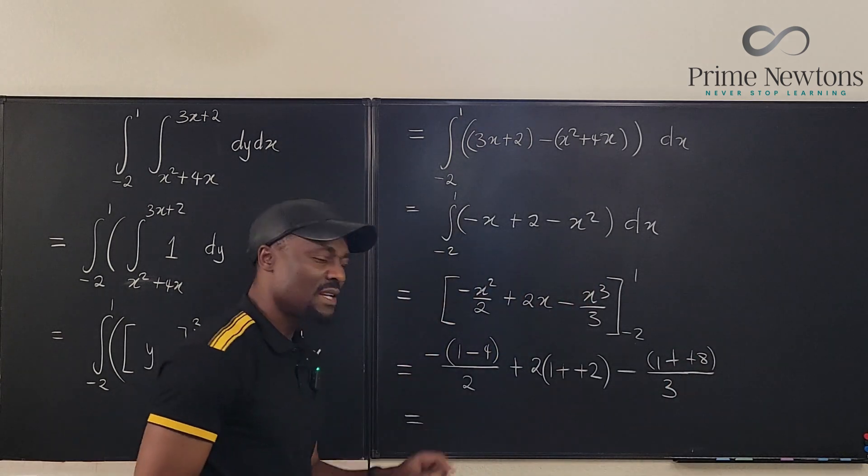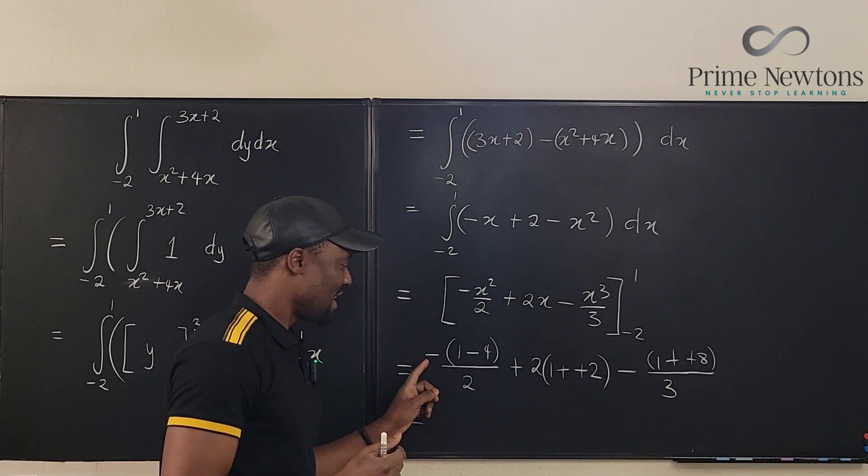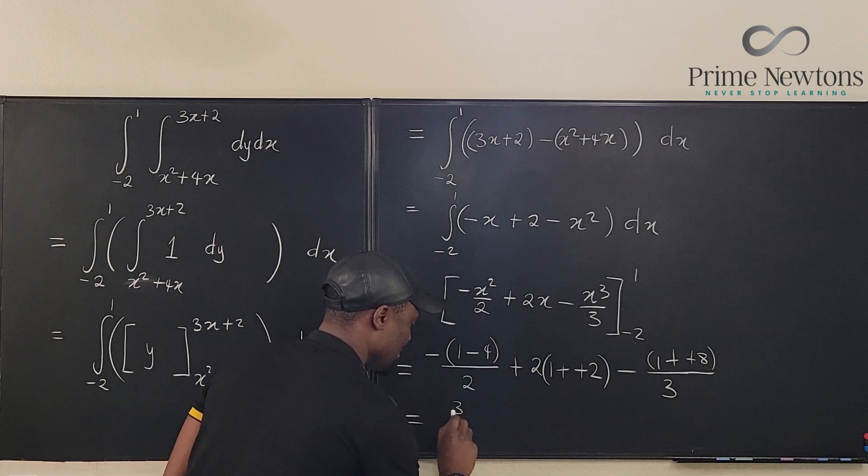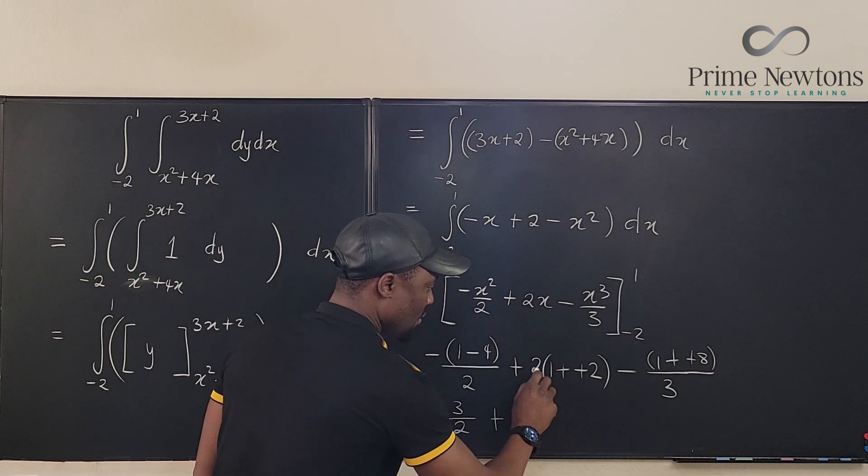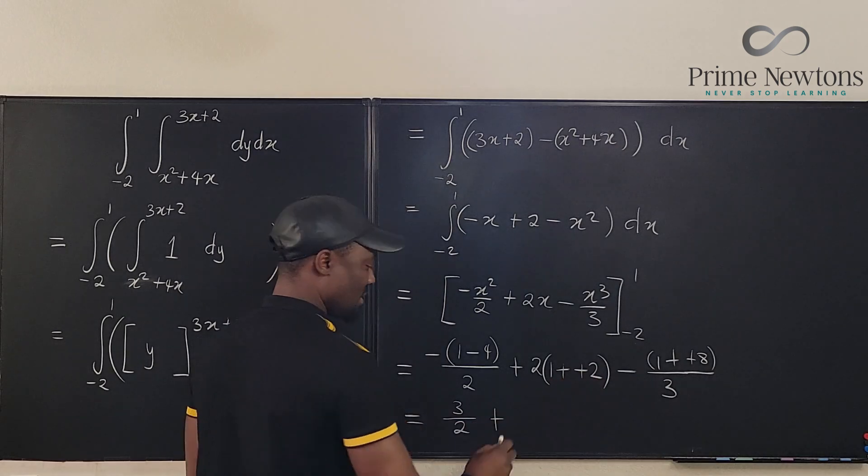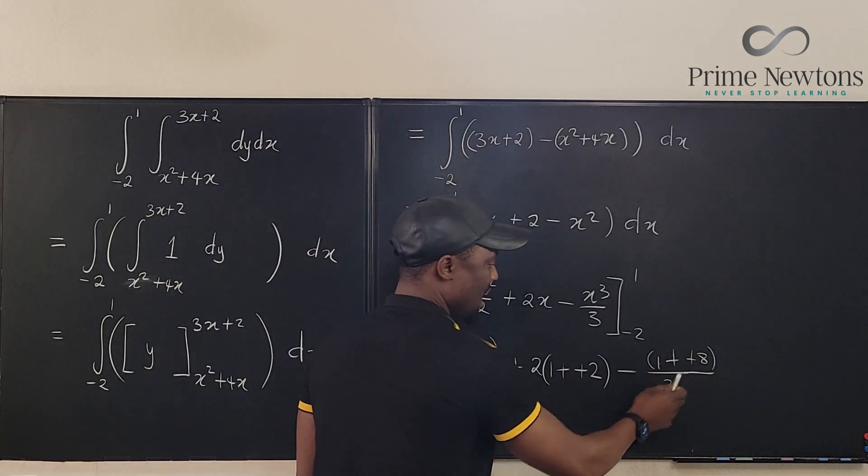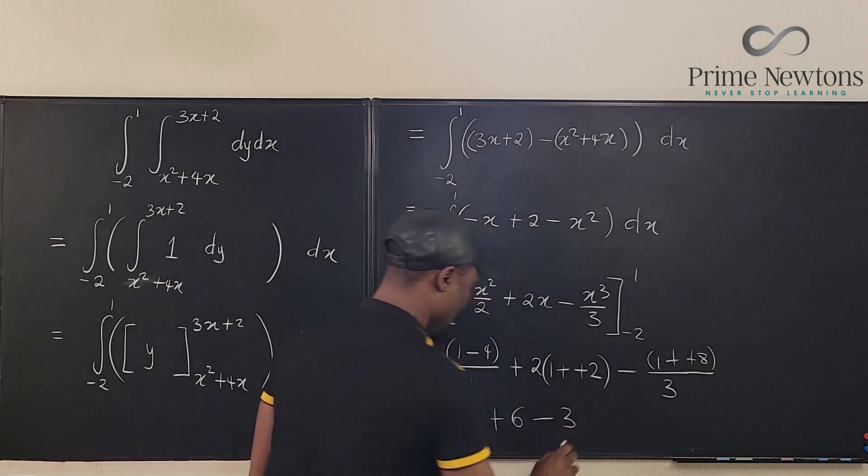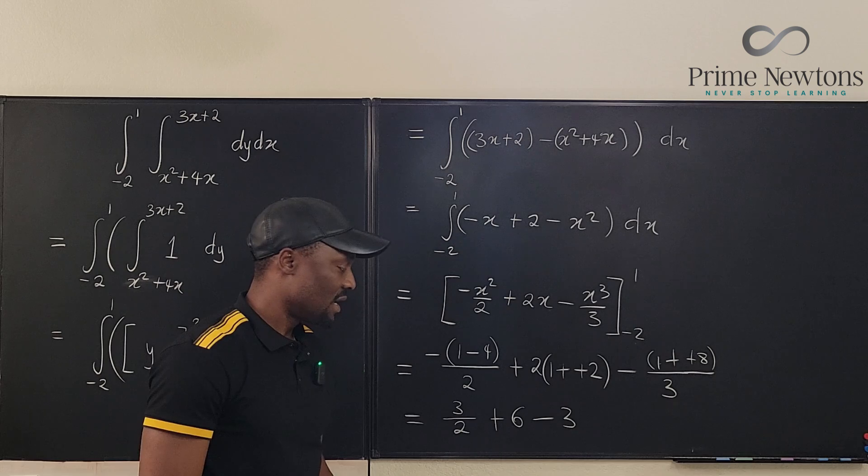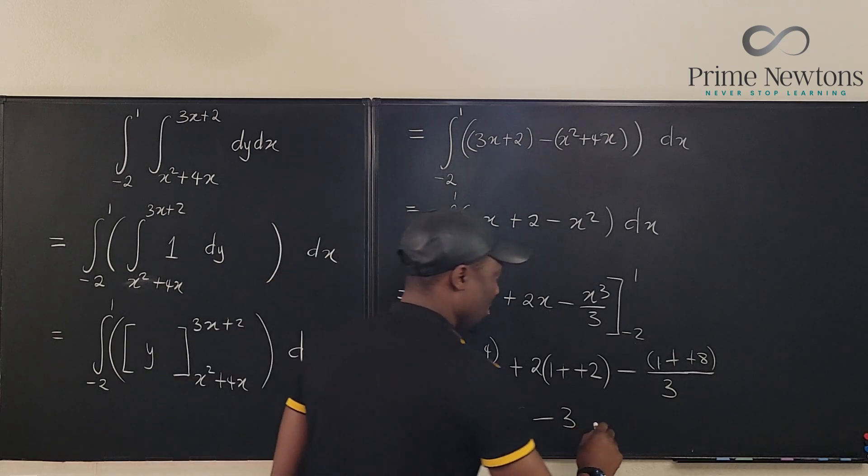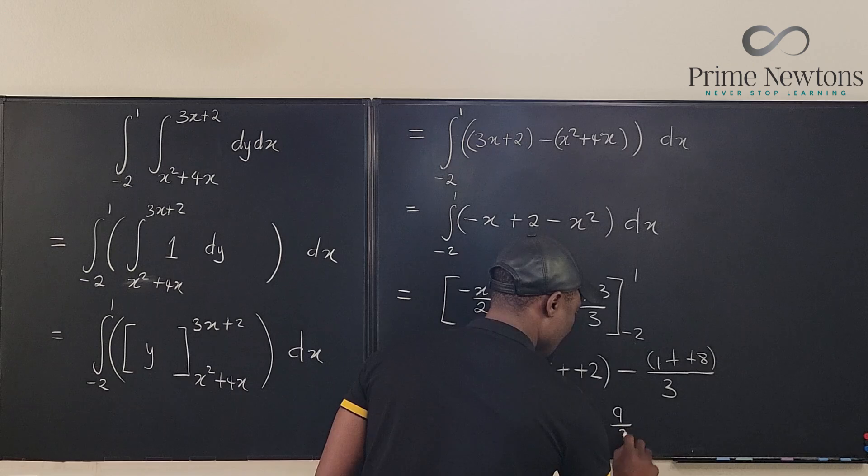So, what do we have? Here, we have 1 minus 4 is going to be negative 3. Negative negative 3 is 3 halves. So, I have 3 over 2. And here, I have plus 2 times. This is 1 plus 2 is 3. That's going to be 6. And I have minus. This is going to be 9 over 3, which is 3. So, if you look at it, it is 3 halves plus 3, which is going to be 9 halves. So, our answer here is 9 over 2.